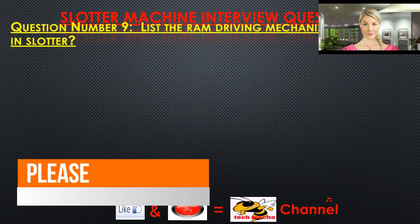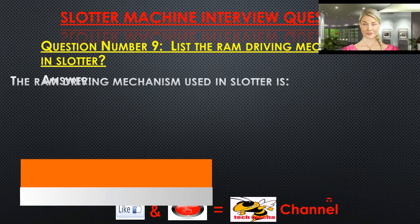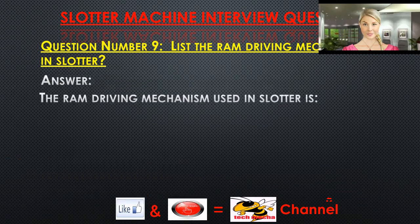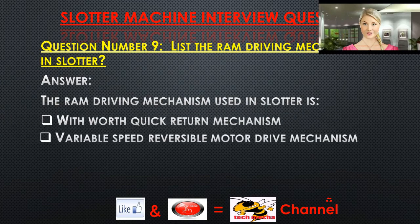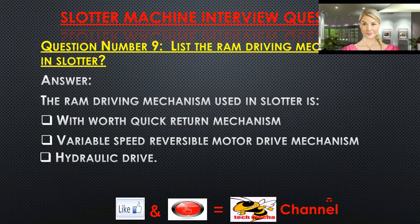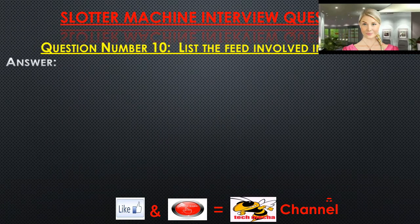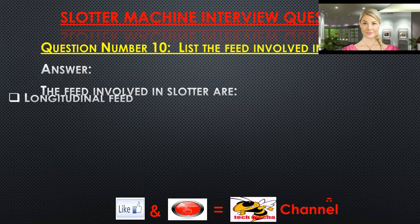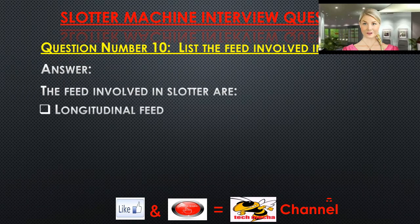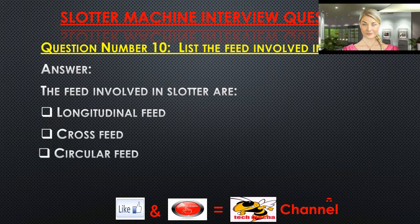Question number nine: List the ram driving mechanisms used in a slotter. Answer: The ram driving mechanisms used in a slotter are the Whitworth quick return mechanism and variable speed reversible motor drive. Question number ten: List the feeds involved in a slotter. Answer: The feeds involved in a slotter are longitudinal feed, cross feed, and circular feed.